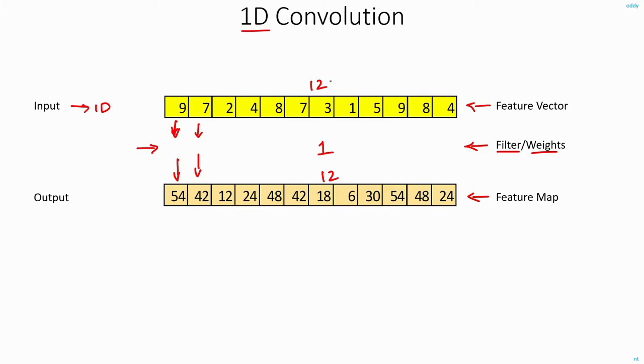But in machine learning, it's common to represent all values in terms of matrices. In that case, your input array can be treated as of size 12 by 1. And your filter will be of size 1 by 1. And your output feature map is of size 12 by 1.